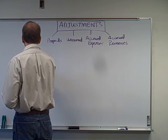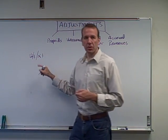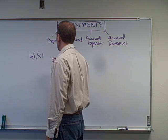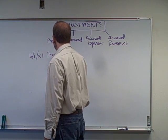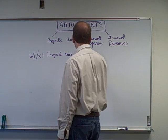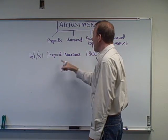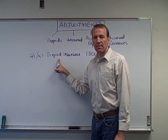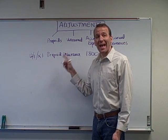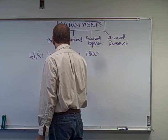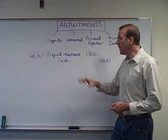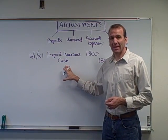So let's write this down. On 12-1, Year 1, we paid $1,800 for this insurance policy. What we do is debit an account called Prepaid Insurance for $1,800 — this account is an asset, sometimes called Prepaid Insurance Expense — and then we credit Cash to reduce it by $1,800. This is the original entry; this is not the adjustment.